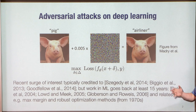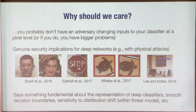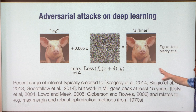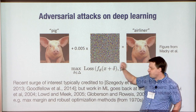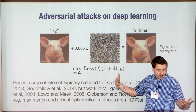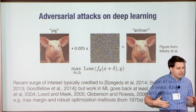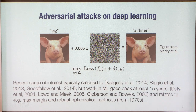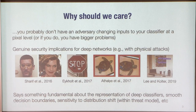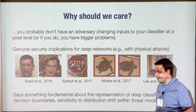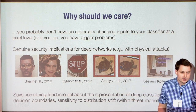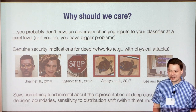Before jumping into what we can do about this, I want to address the question I get a lot: why should we care? This is a totally fair question. If you look at this example, this is a very carefully crafted noise specifically chosen to maximize the loss knowing the model's gradients. If you actually have an adversary controlling the pixel inputs to your system and able to manipulate them bitwise, you probably have bigger problems than misclassifying a pig as an airplane.